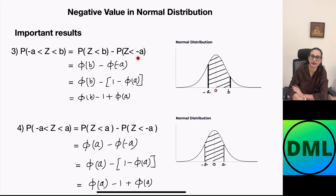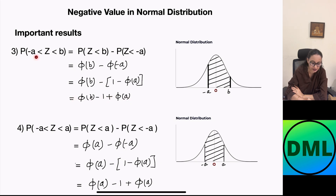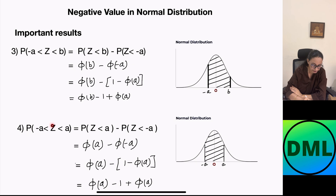Probability of Z less than B will be written as Φ(B) minus probability of Z less than minus A. This value will be written as Φ(−A). We know that Φ(−A) can be written as 1 minus Φ(A). Before that there is a negative sign, so when you open the bracket you will get Φ(B) minus 1 plus Φ(A). This will become the formula for probability of Z greater than minus A, less than B.